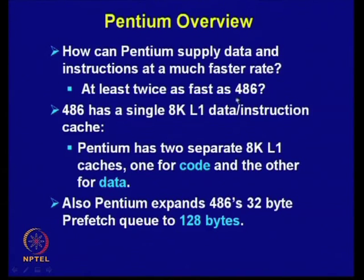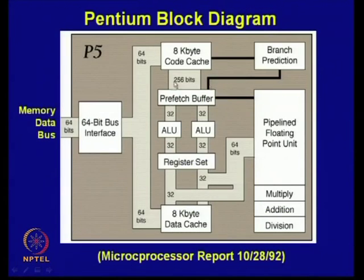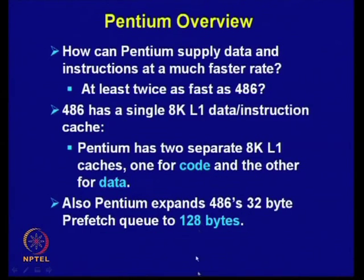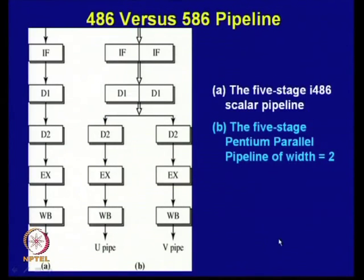As seen in the diagram, Pentium is at least twice as fast as the 486 because of the internal architecture. Pentium expands the prefetch queue from 32 bytes to 128 bytes. The Pentium superscalar processor has two pipes — U-pipe and V-pipe — with separate execution units, separate write buffers, and separate decode units. The pipeline stages are: instruction fetch, instruction decode (two stages), execution, and write back, performed for the two different execution units.